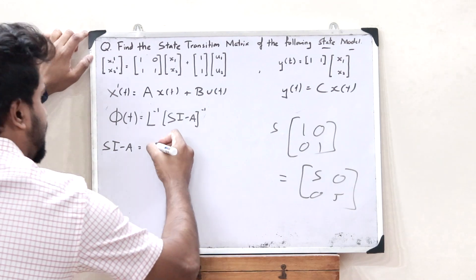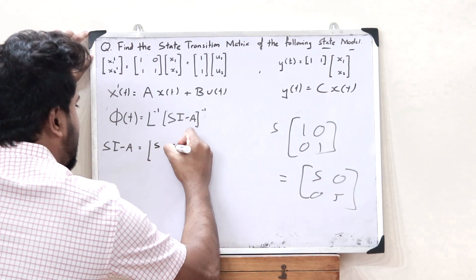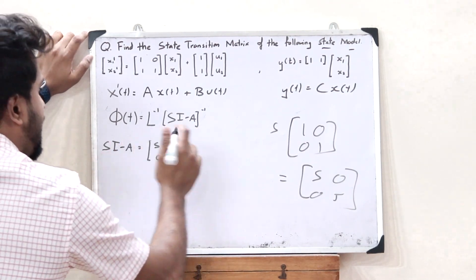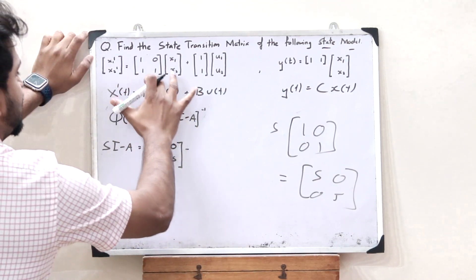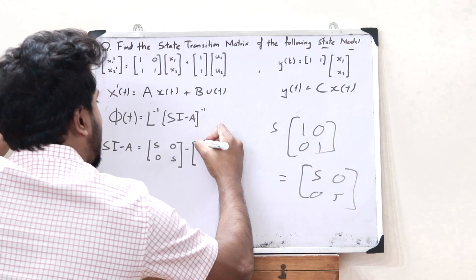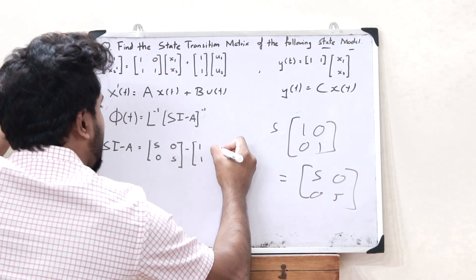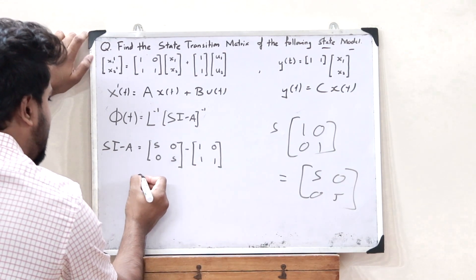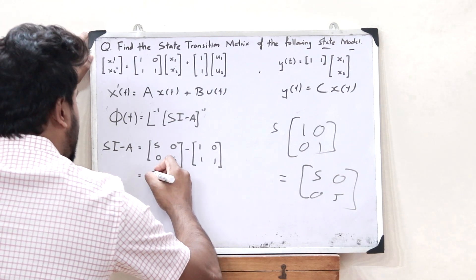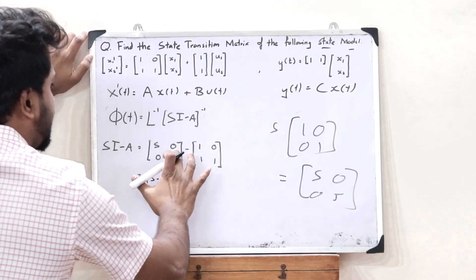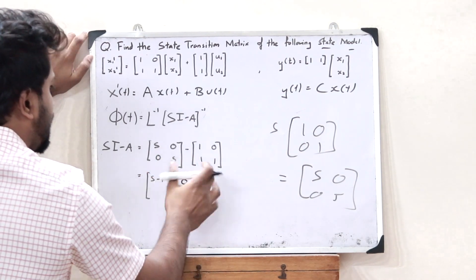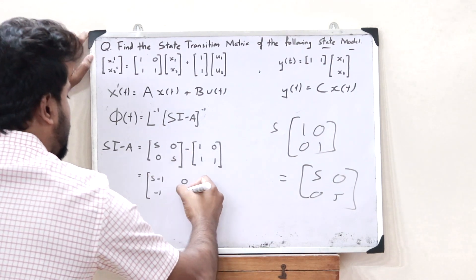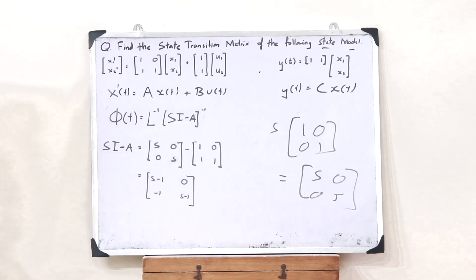So sI - A equals [s 0; 0 s] minus [1 0; 1 1]. On simplifying, the first term is s - 1, the second term is 0 - 0 = 0, the third term is 0 - 1 = -1, and the fourth term is s - 1. So sI - A = [s-1, 0; -1, s-1].